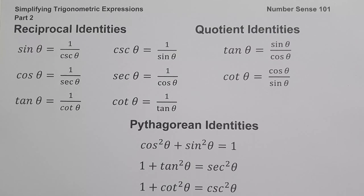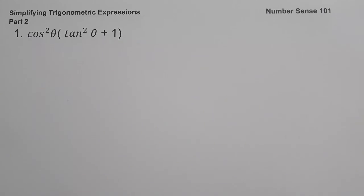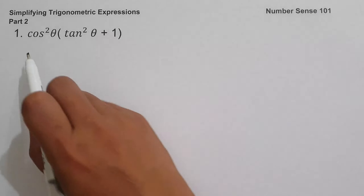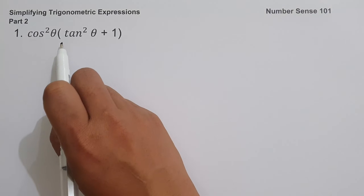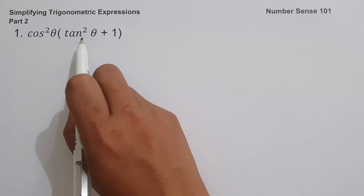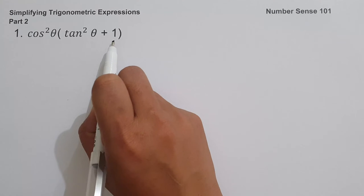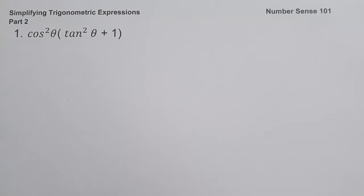So let's start with the examples. On example number 1, we have cos θ times the quantity (tan θ + 1).